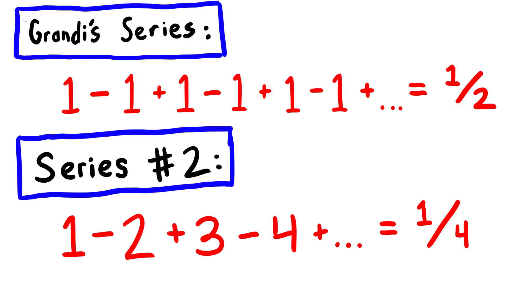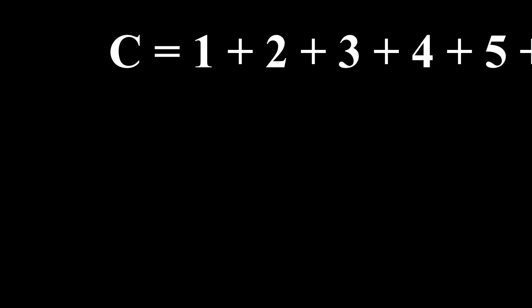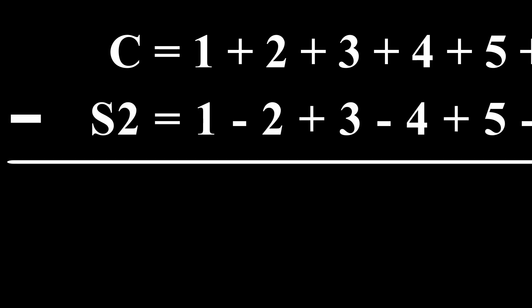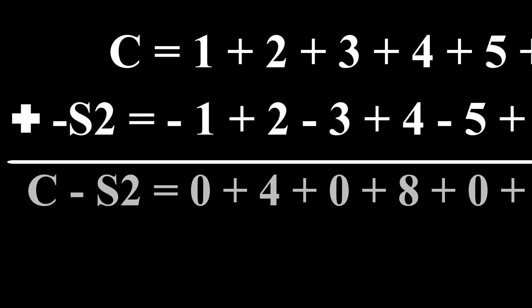Now we have all the tools we need to find our final sum, which let's label C. We'll begin by subtracting S2 from C. Because we're subtracting, all the signs on the bottom can be reversed. Then we can add everything up.